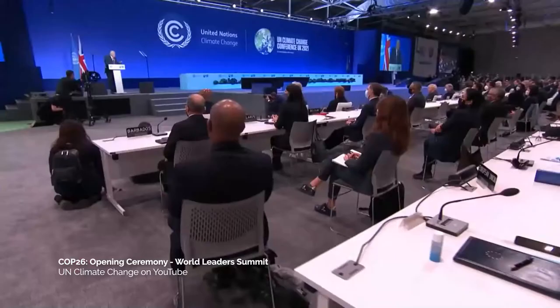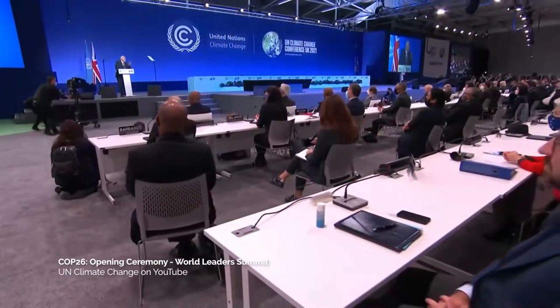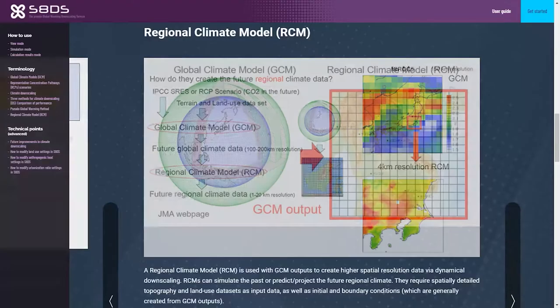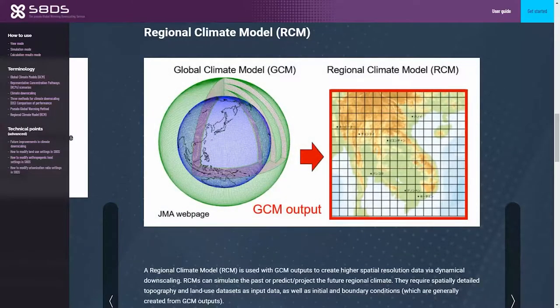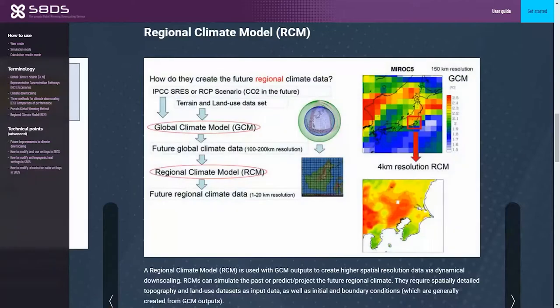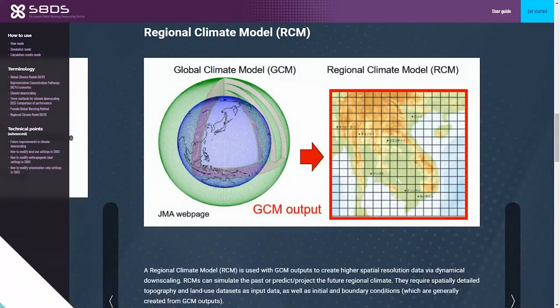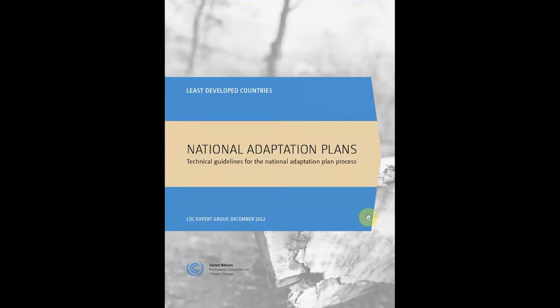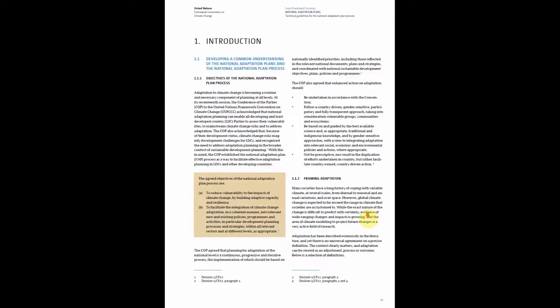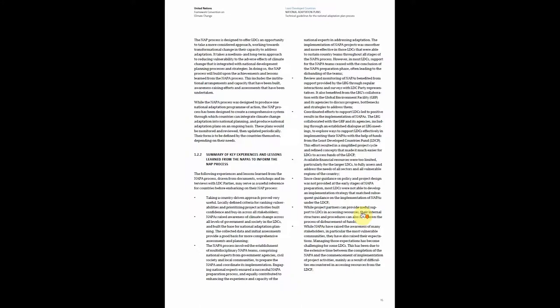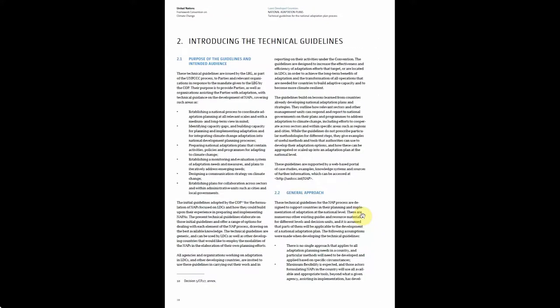Given the importance of climate information in the adaptation effort, there is a growing number of national, regional, and global initiatives to improve the quality and accessibility of climate information. These efforts have produced climate reports, observed data, and climate model outputs. Such information can be accessed from national adaptation plans, national communication reports, meteorological and hydrological reports, and other sources. A great deal of notable global climate information can be accessed from the following links.